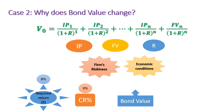When investor demand is high, bond price is greater than the face value. Our bond value was 1,086 Egyptian pounds, which is greater than the face value of 1,000. This bond is said to sell at a premium — because investors in the market require a rate of return less than the coupon rate provided by the bond, resulting in greater bond value than face value. This is a premium bond.